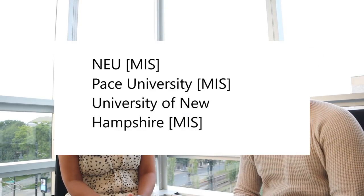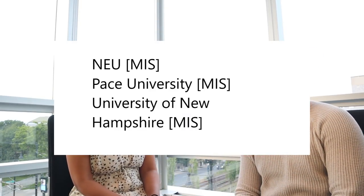How many universities did you apply to and how many admits did you actually get? I applied to three universities and got admits in all three. Those three universities were Pace University, University of New Hampshire, and Northeastern — all for MIS.